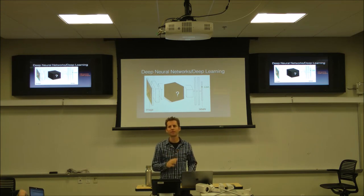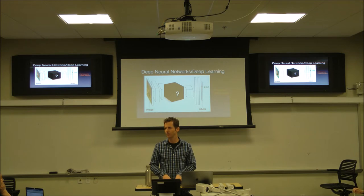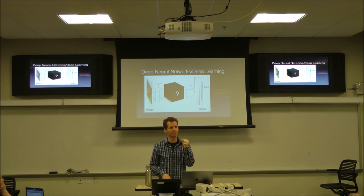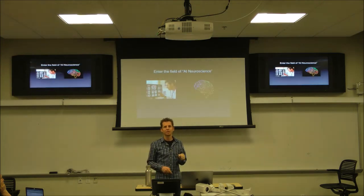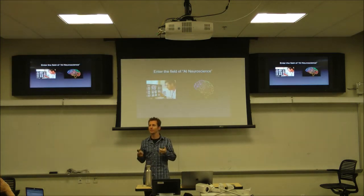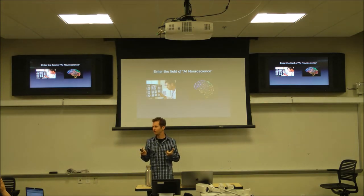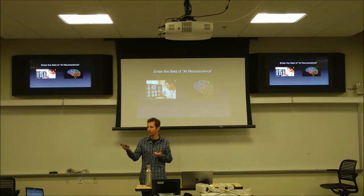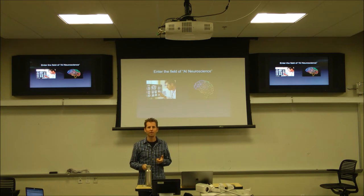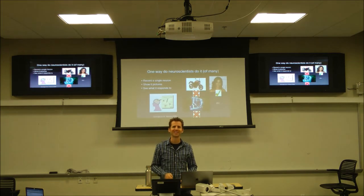Because neural nets are huge and complicated, they are notoriously known as black boxes — it's very difficult to figure out how they work. What we're going to do in the first part of this talk is try to shine light into the black box. We enter the field of what I call AI neuroscience, where we're in the same situation as a real neuroscientist: we have a complicated artifact we've been handed, and we try to reverse engineer how it works.